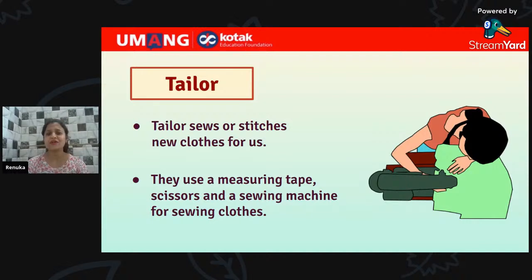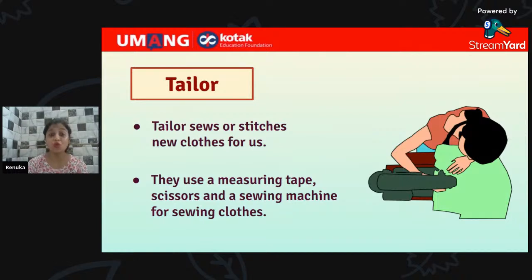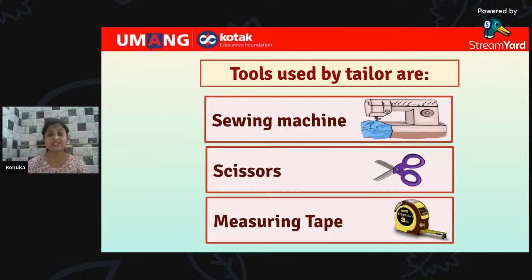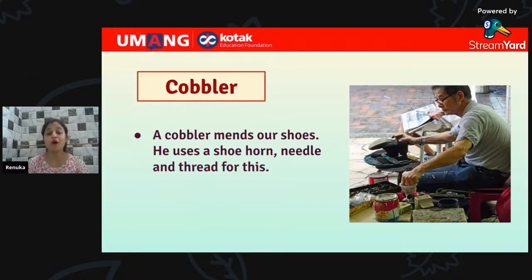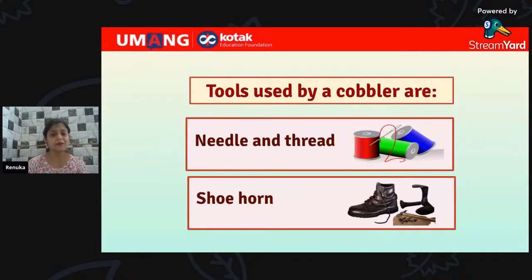Next is Tailor. A tailor sews or stitches new clothes for us. They use a measuring tape, scissors, and a sewing machine for sewing our clothes. The tools used by a tailor are sewing machine, scissors, and measuring tape. Next is Cobbler. Cobblers mend our shoes. They use a shoe horn, needle, and thread. The tools used by a cobbler are needle and thread.